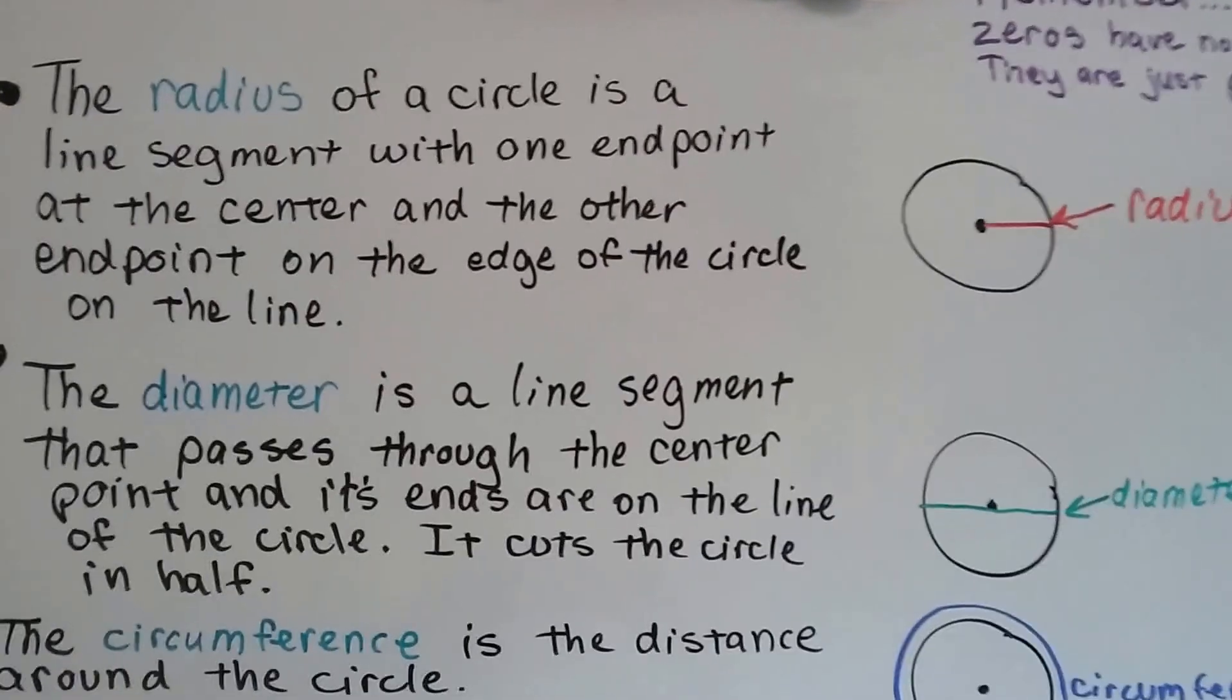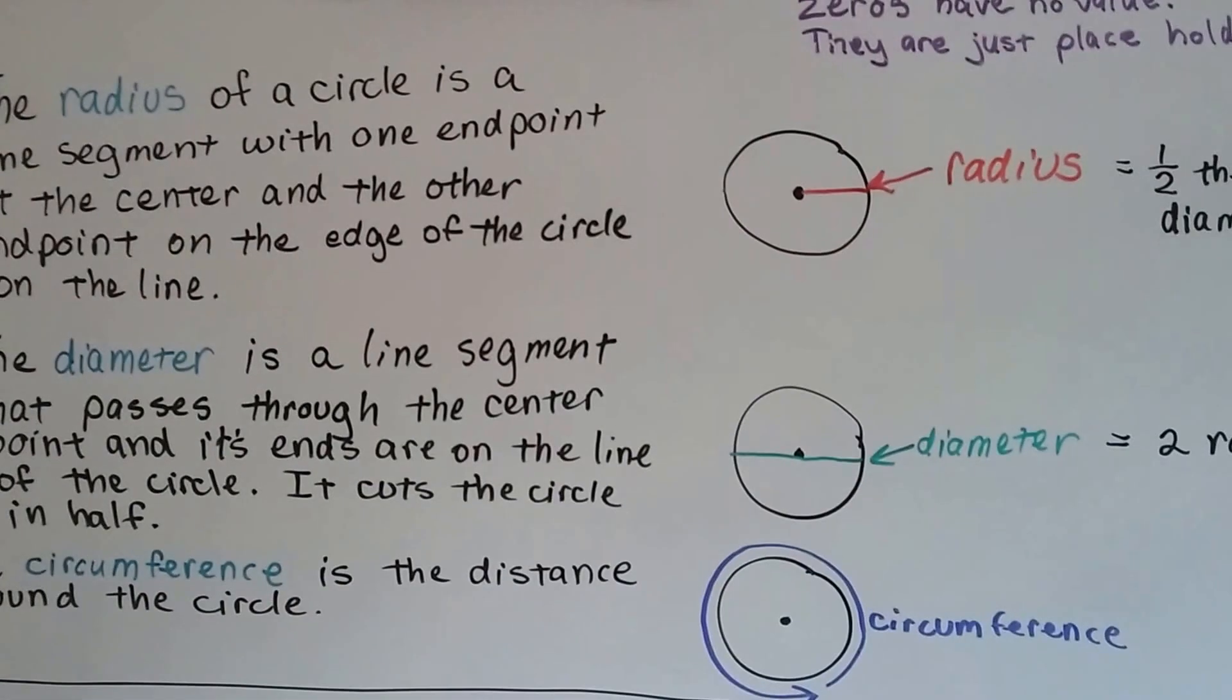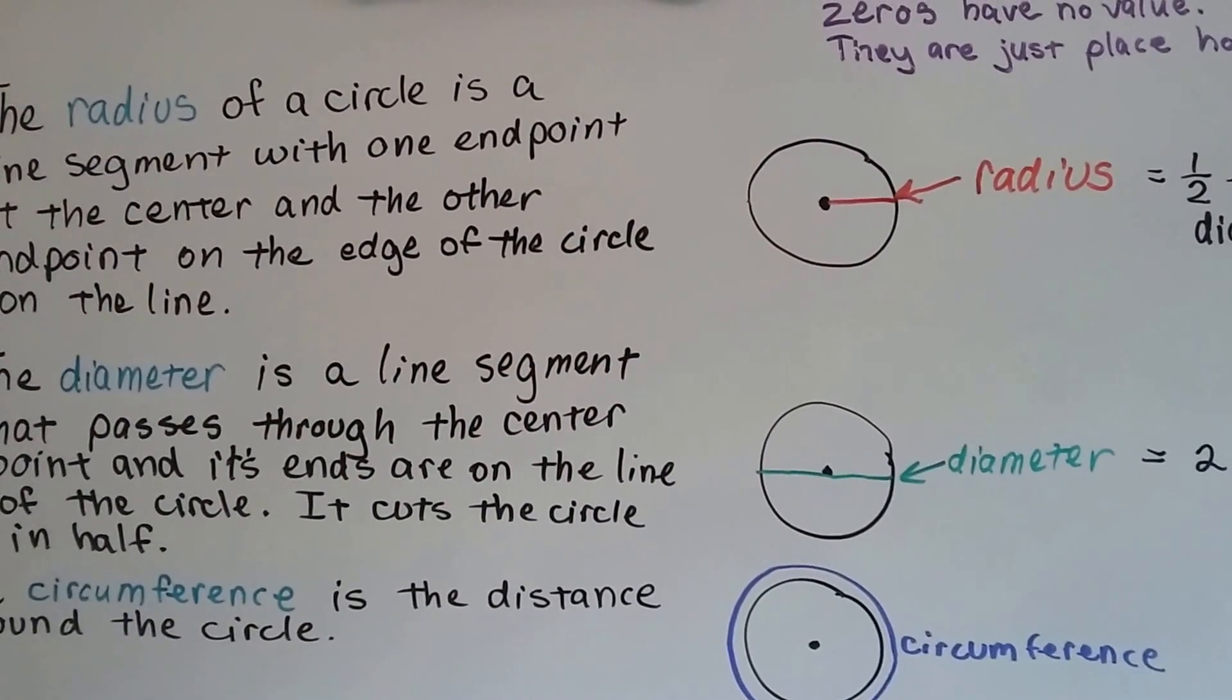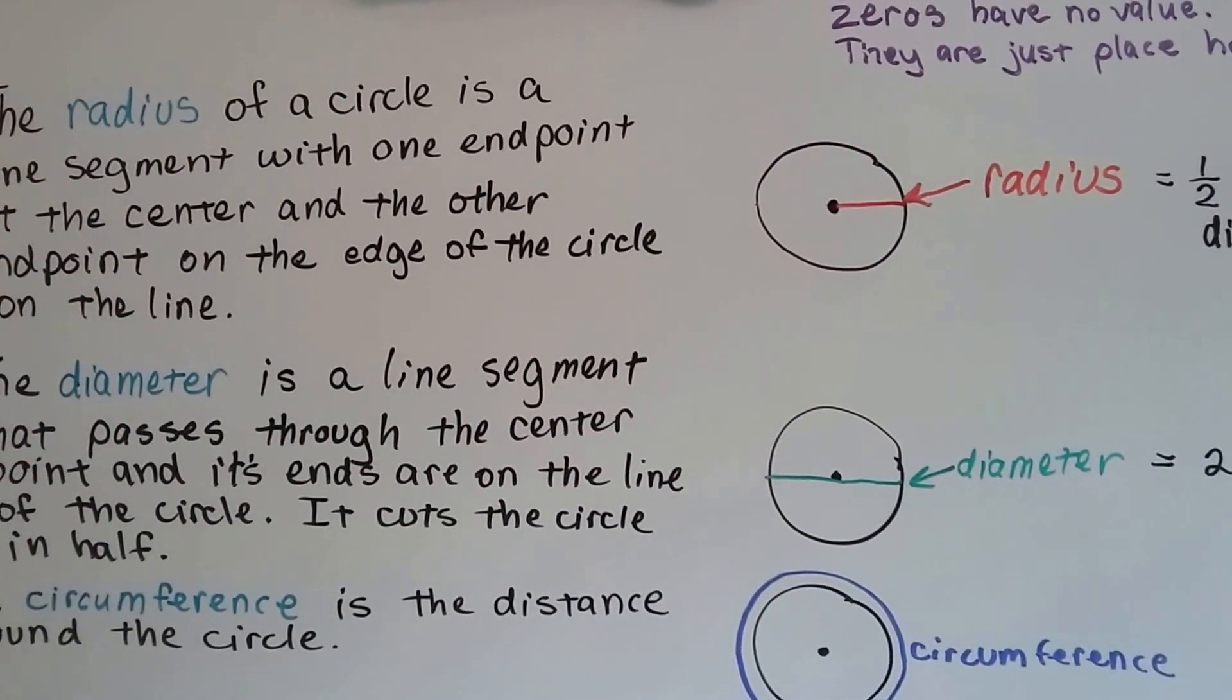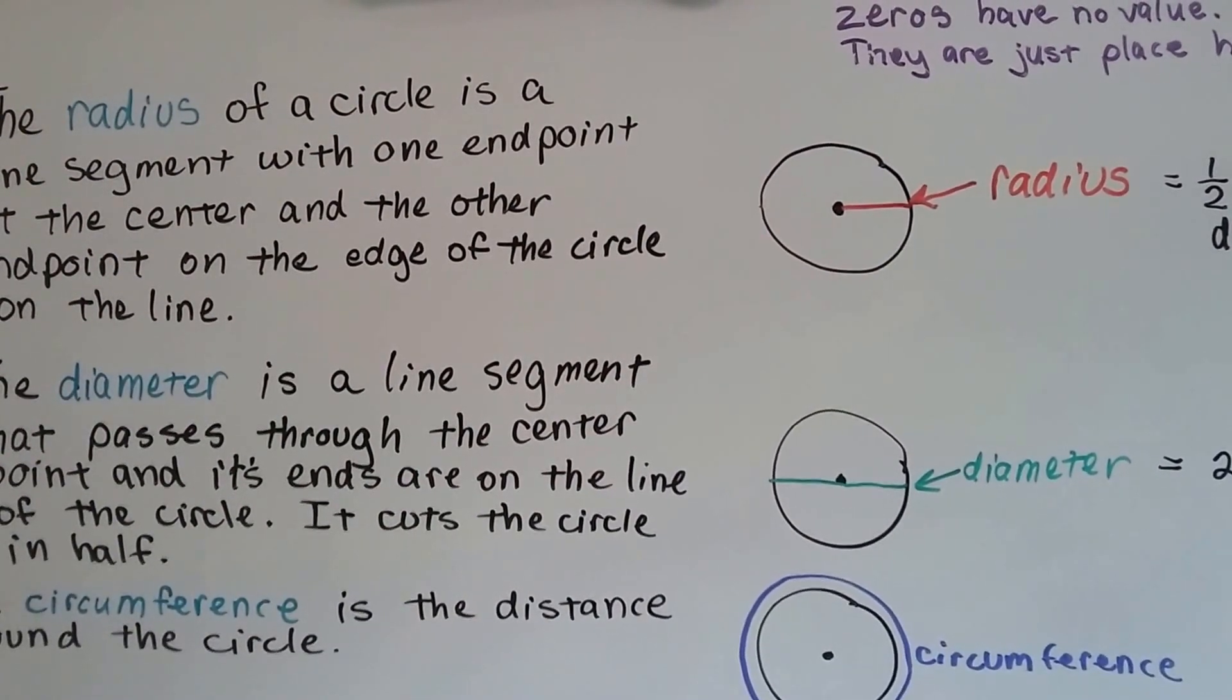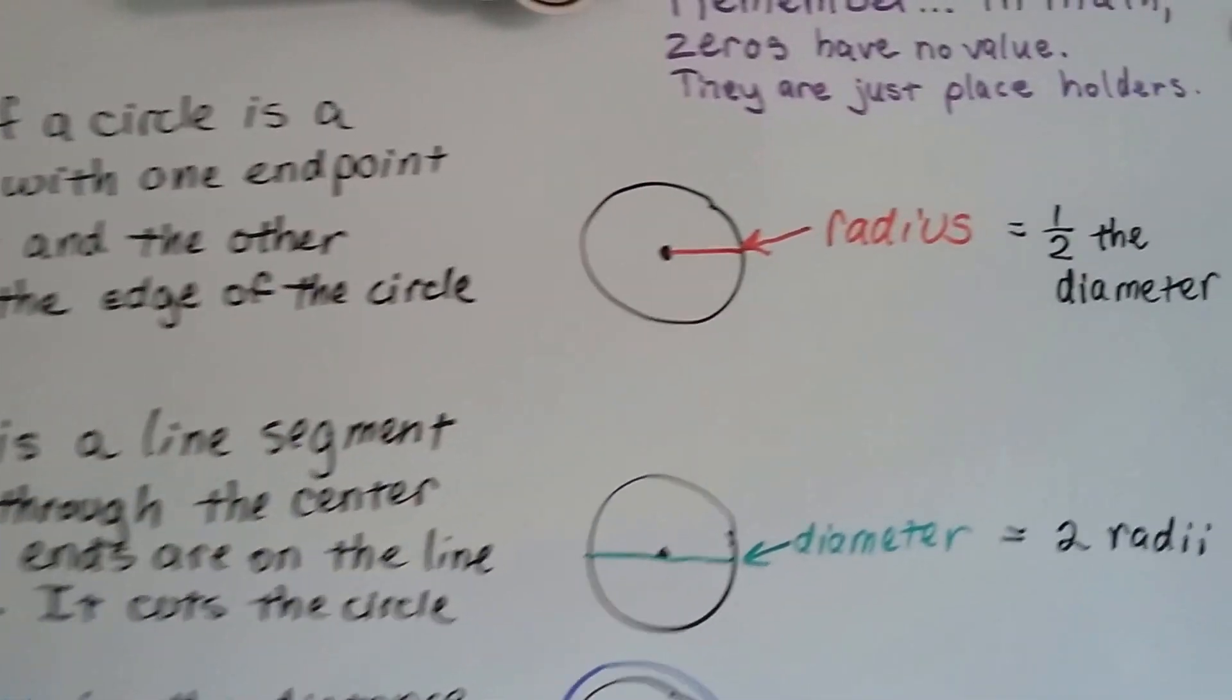Do you remember last year from fifth grade, we talked about the radius of a circle and how it's a line segment with one endpoint at the center and the other endpoint at the edge of a circle on the line? Like my red one right here, see the radius?